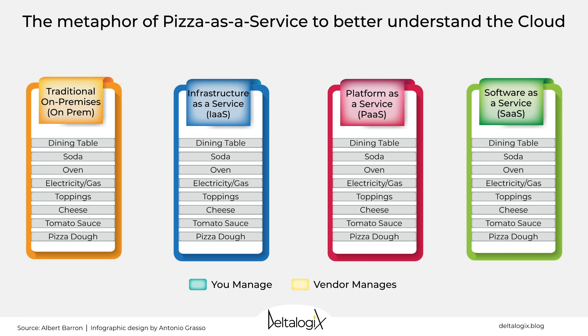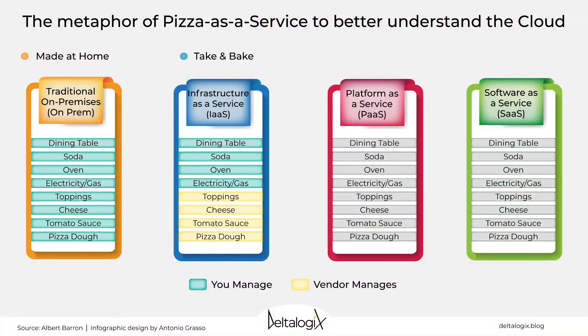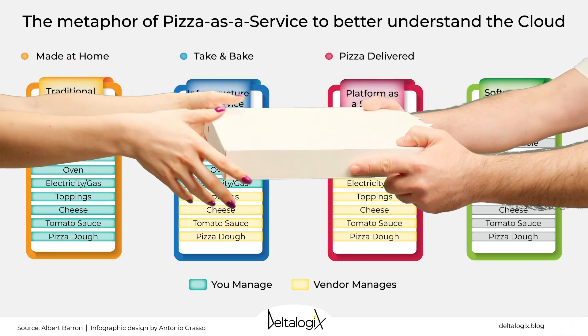In the on-premise scenario, every component is managed by you. It's just like pizza made at home. In the infrastructure as a service scenario, only the ingredients for pizza are managed by the vendor, and the rest by you. It's just like the take-and-bake solution. Again, in the platform as a service scenario, the only thing you need to manage are complements like location and beverage, while everything regarding pizza is managed by the vendor. It's just like pizza delivered.